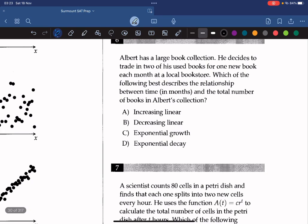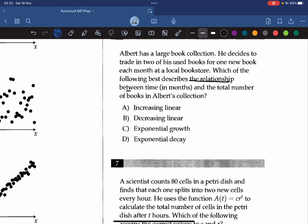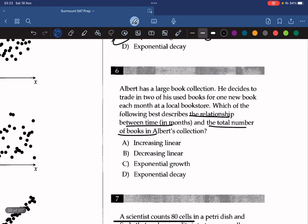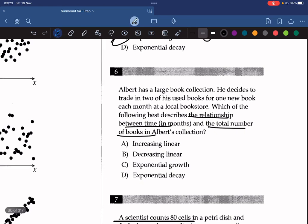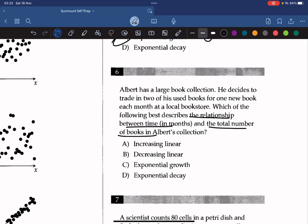Question 6. Albert has a large book collection. He decides to trade in two of his used books for one new book each month at a local bookstore. Which of the following best describes the relationship between the time in months and the total number of books in Albert's collection? Well, each month, Albert loses a book, right? Because he decides to trade in two for one. So there is a constant decrease. If it's constant, it can't be exponential. And since it's decreasing every time, it must be decreasing linearly.